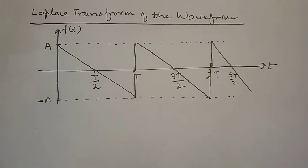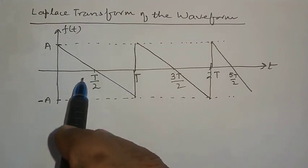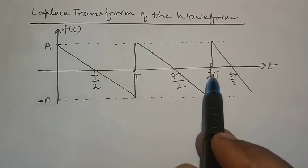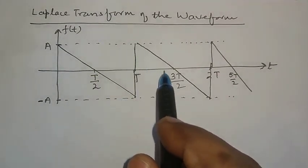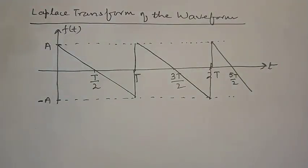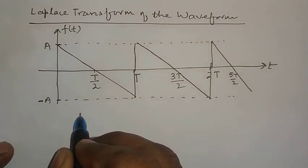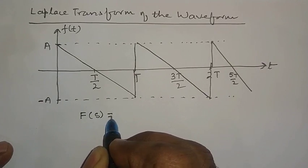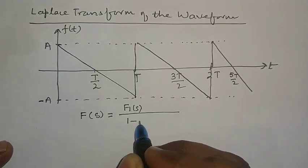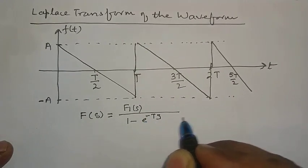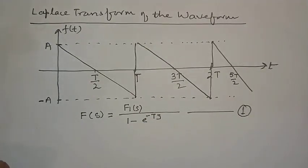I have considered a waveform which is periodic, because after some instant this waveform is repeated. After observing that this waveform is periodic, we know that for a periodic waveform, the Laplace Transform F(s) is equal to F1(s) divided by 1 minus e to the power minus T·s. This is the general formula to calculate the Laplace Transform of any periodic waveform.